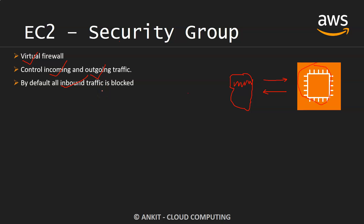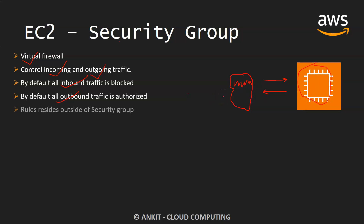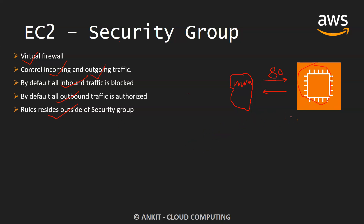Those ports are configured when we create the EC2 instance. By default, all outbound traffic is authorized, so from EC2 you can connect with anything. This rule resides outside of the security group — if you try to connect from the outside world via port 80 on HTTP and get a timeout issue, the EC2 instance won't even recognize that request if the security group has not defined a rule to allow HTTP traffic on port 80.